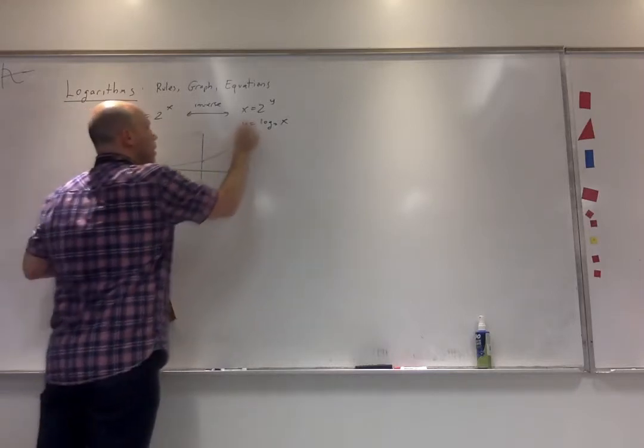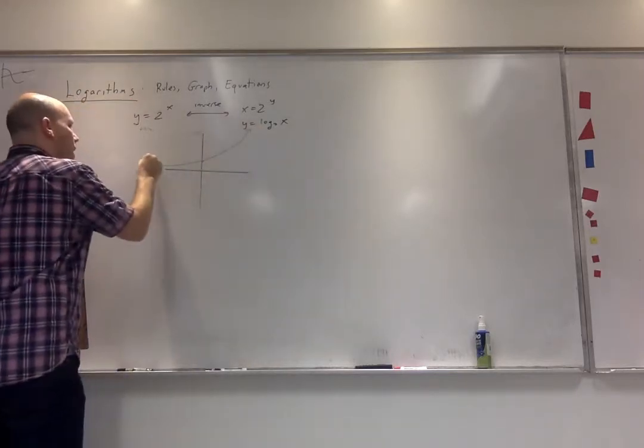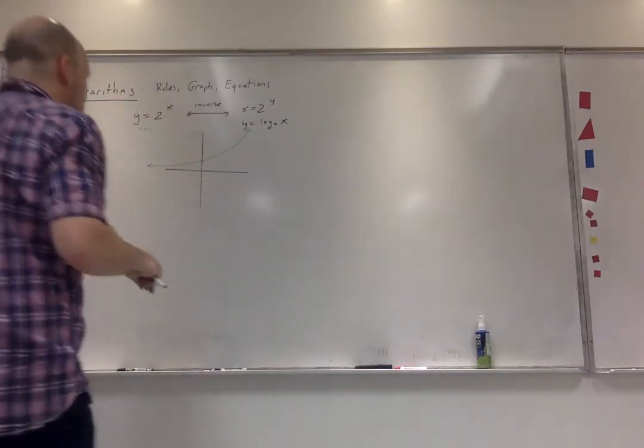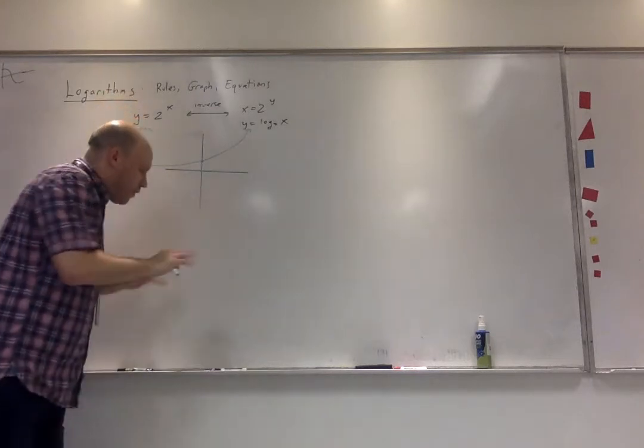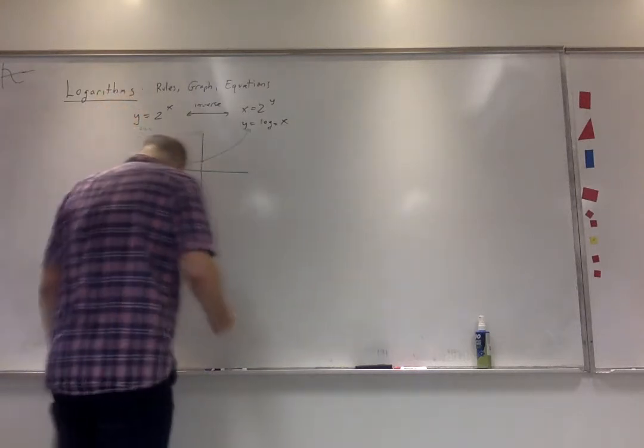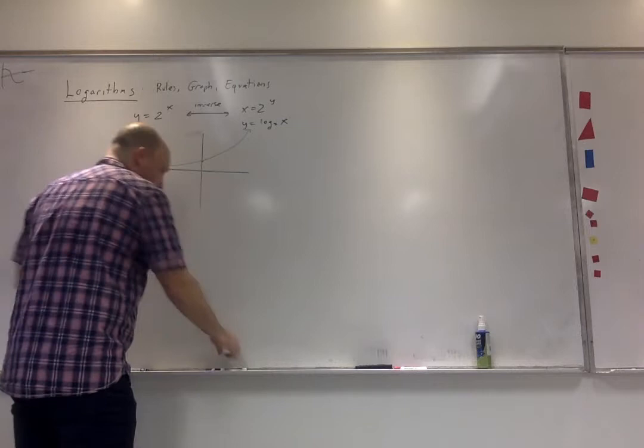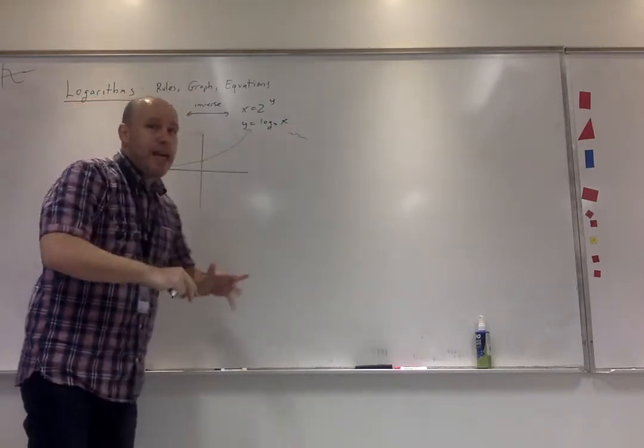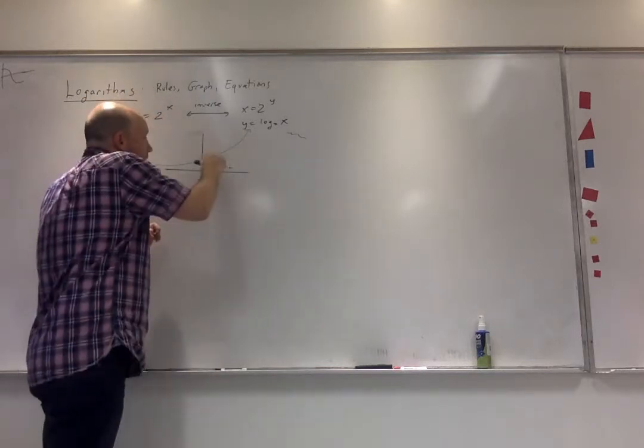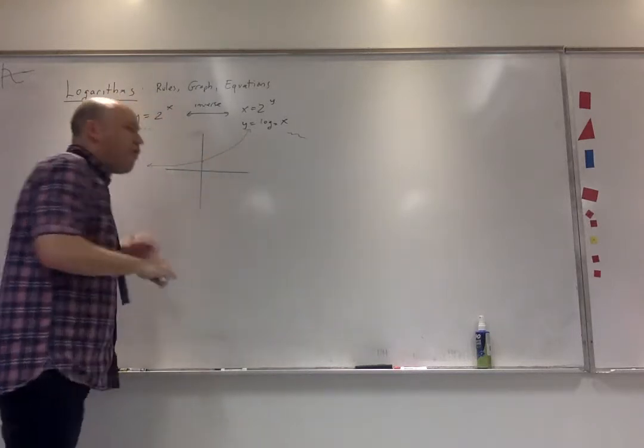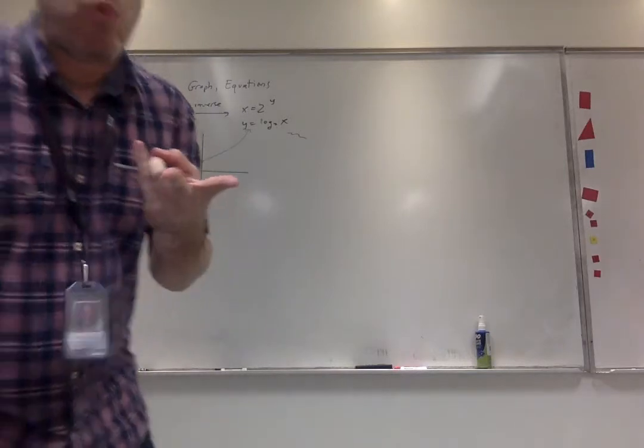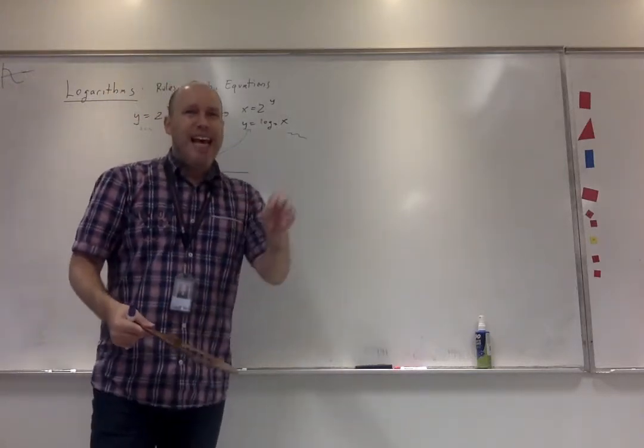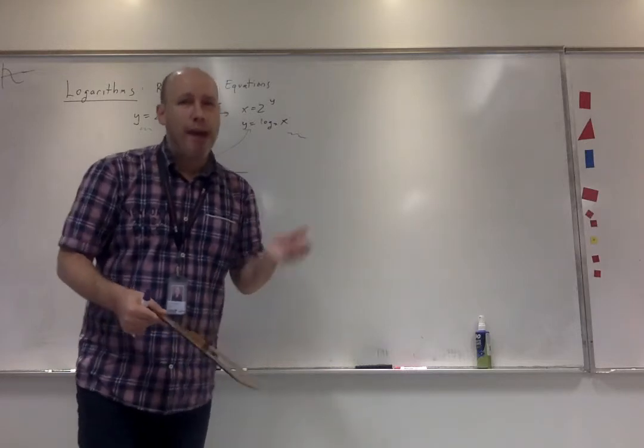Now the idea with the inverse function is that the x and y change. Let's use purple for this. So the idea was that we found the inverse by switching the x and y, which is like reflecting over the line y equals x.